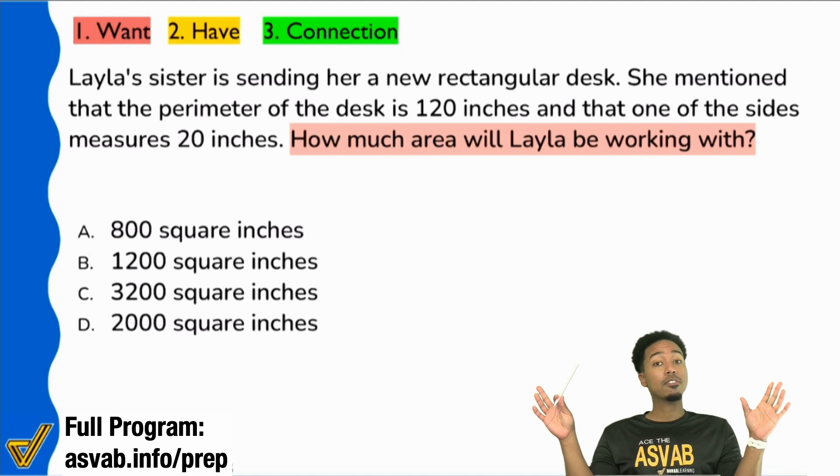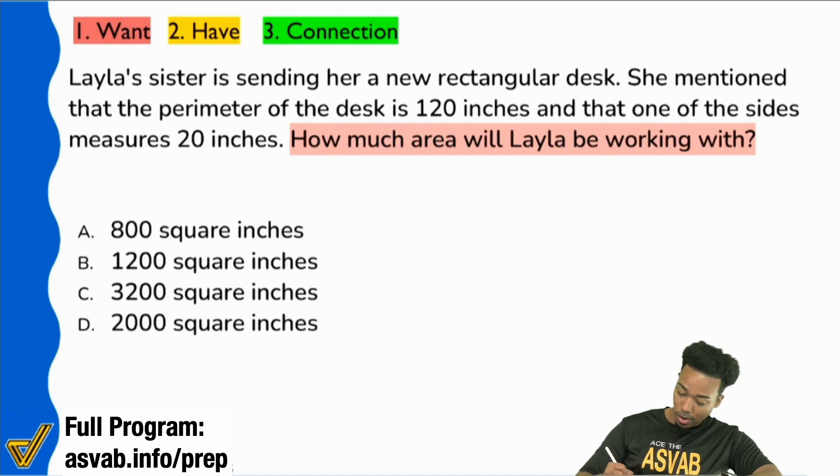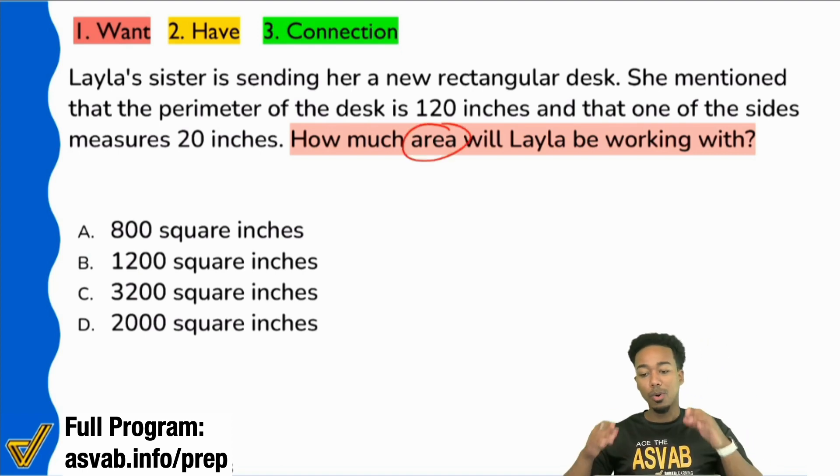Right. If we were cavemen and we could only say one word at a time, we want area. Boom. Right there, we want area. And everybody, once we see a math word, a pure geometry word like area, what's the first thing I'm going to ask myself once I see the word area? What's the shape? Because the shape is going to lead us into the formula.